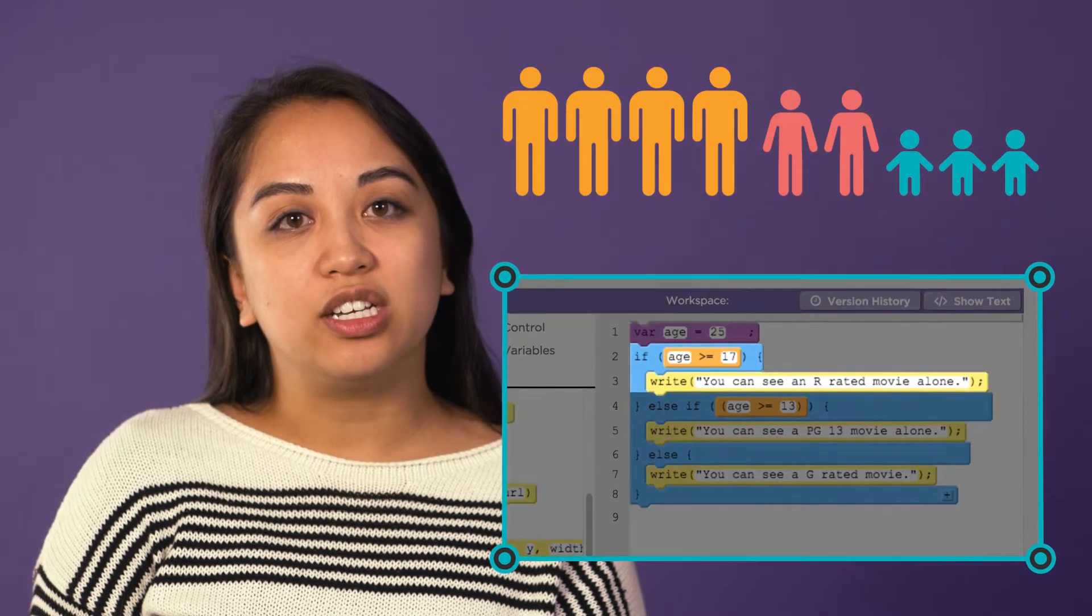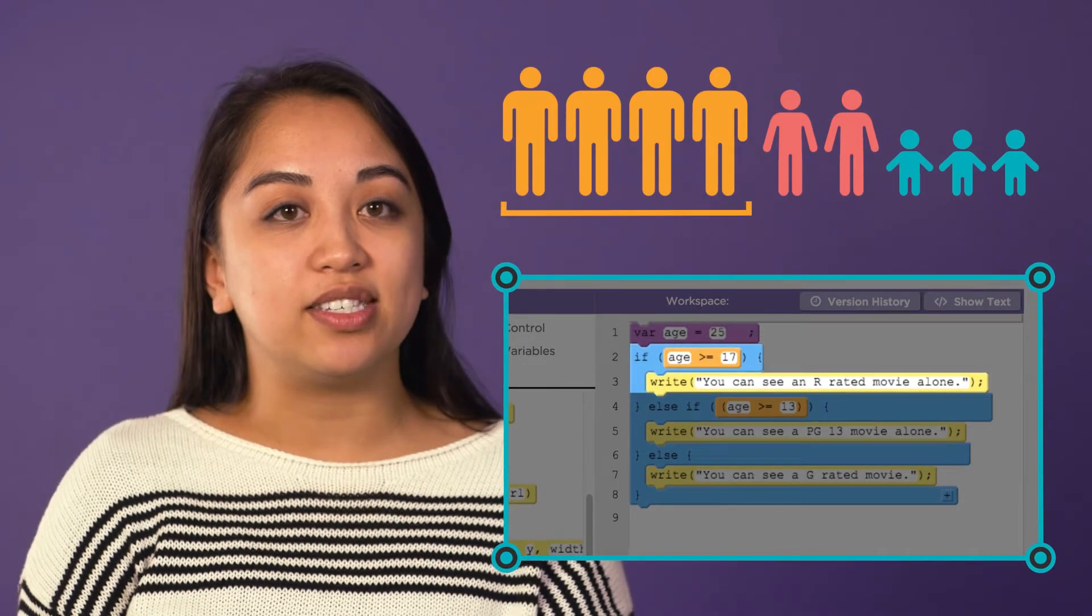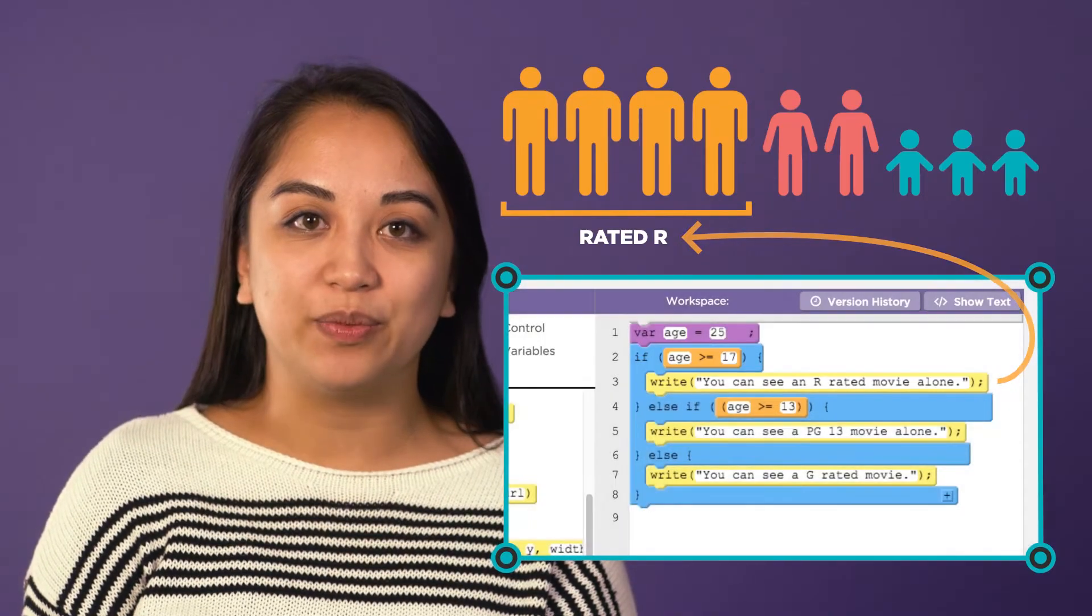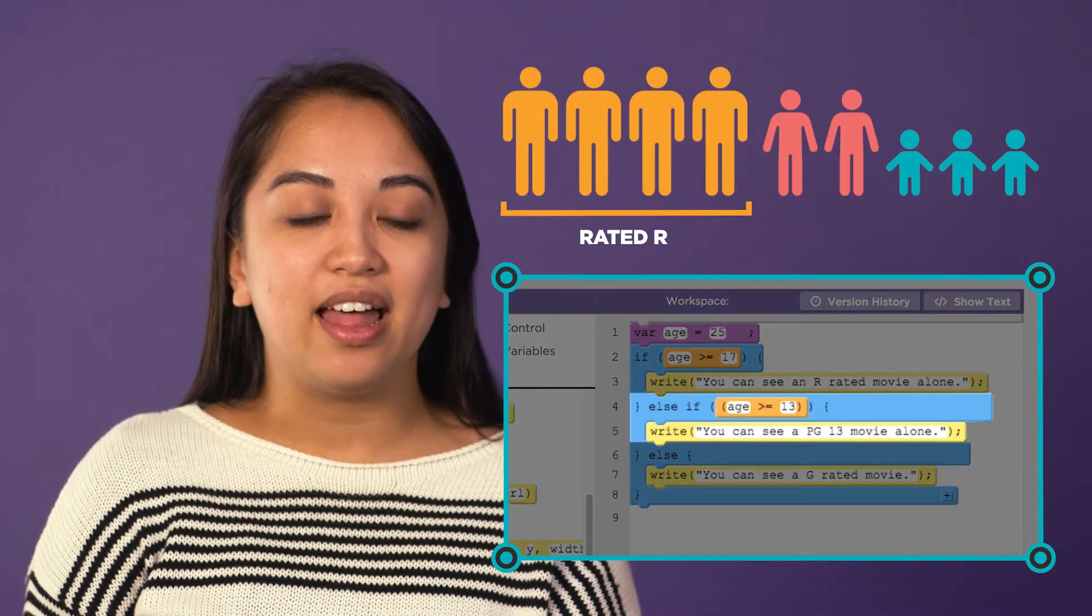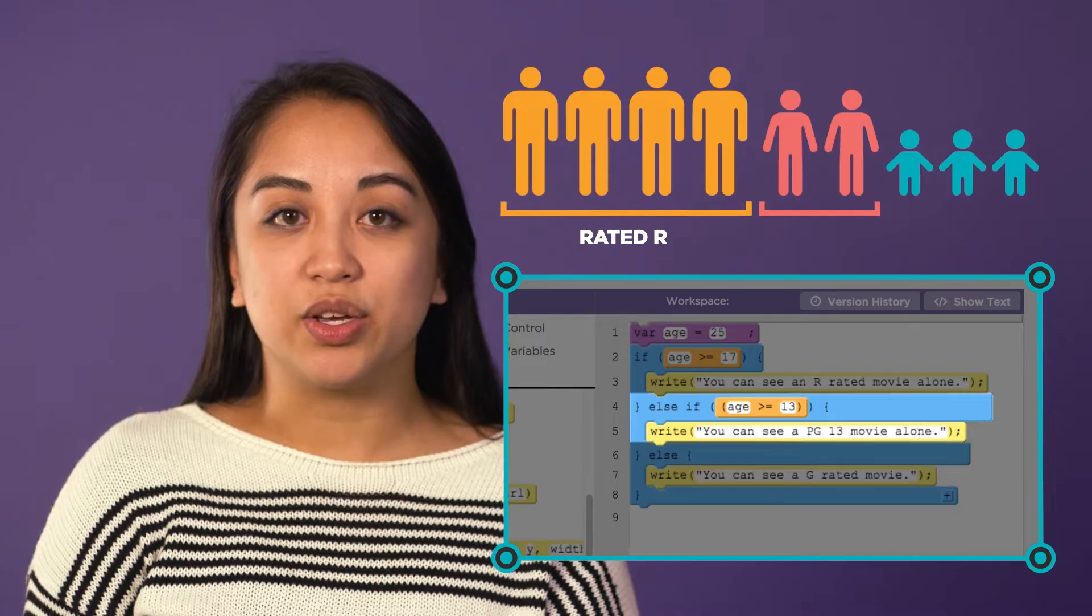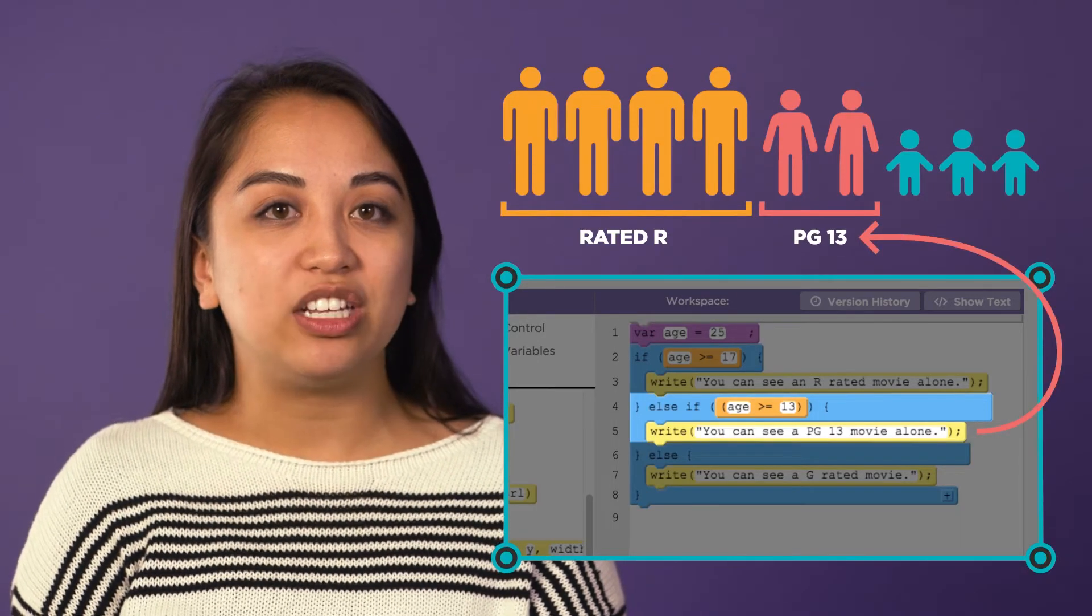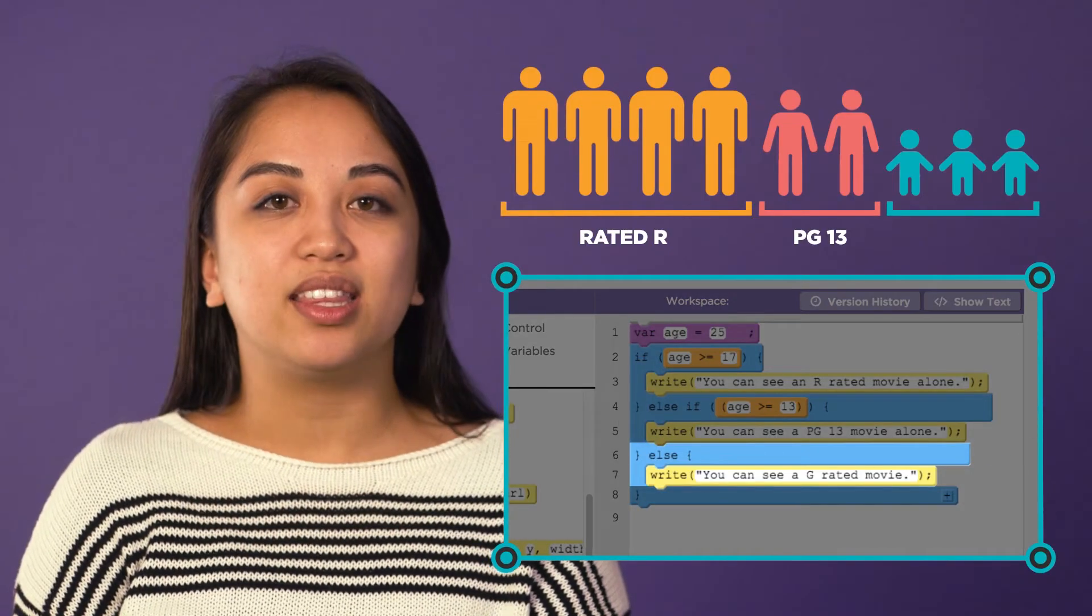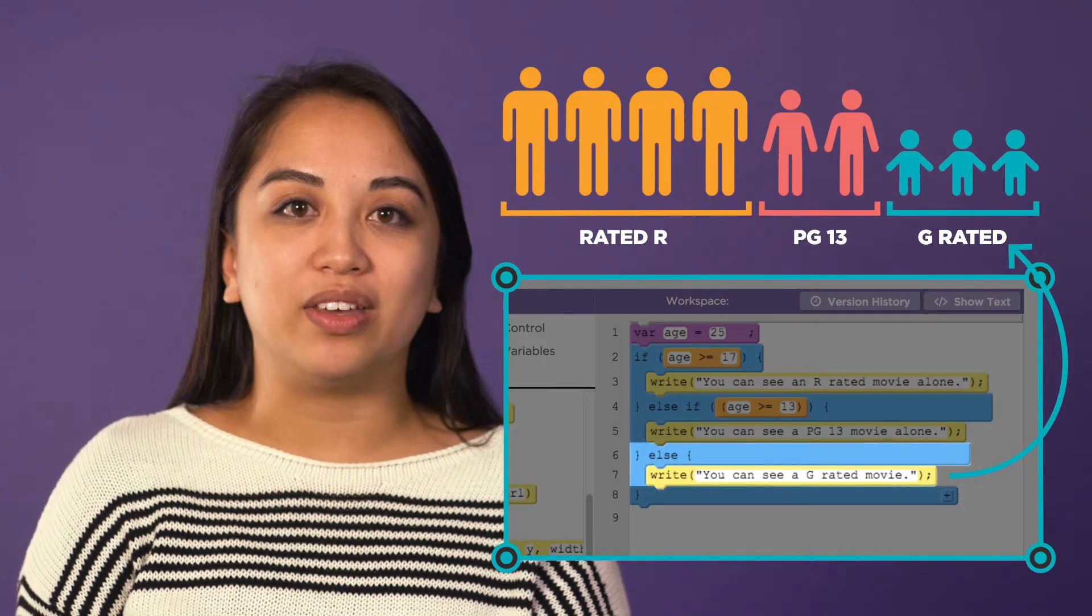So if age is greater than or equal to 17, write that user can see an R-rated movie alone. Else if the age is greater than or equal to 13, write that the user can see a PG-13 movie alone. Else, write that the user can see a G-rated movie alone.